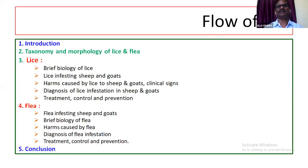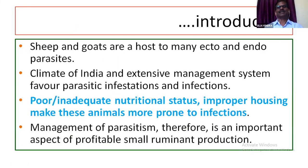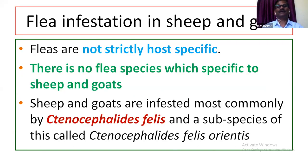Flea infestations in small ruminants is a common problem throughout India. Sheep and goats are host to many ecto- and endoparasites which adversely affect their health and production. Fleas are not strictly host-specific as lice, so they can feed on different species if the preferred species is not available. There is no flea species which is specific to sheep and goats, as we see in the case of lice.